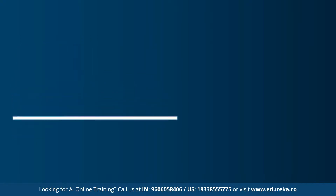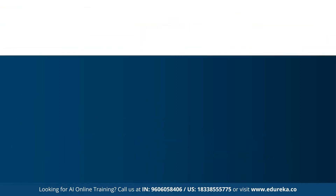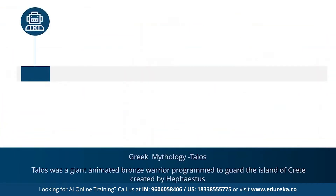Let's get started with the first topic: the history of artificial intelligence. The concept of AI goes back to the classical ages. Under Greek mythology, the concept of machines and mechanical men were well thought of. An example is Talos — a giant animated bronze warrior who was programmed to guard the island of Crete.